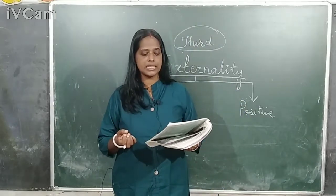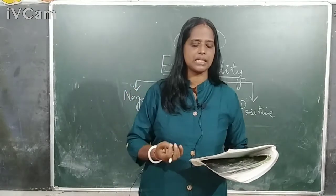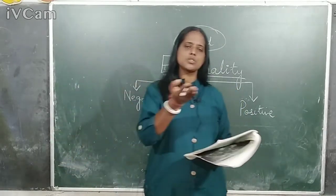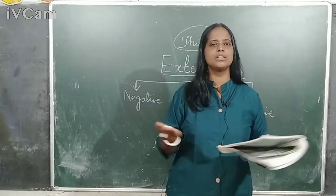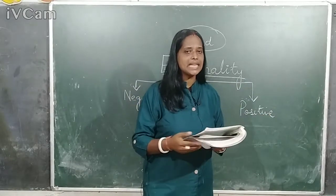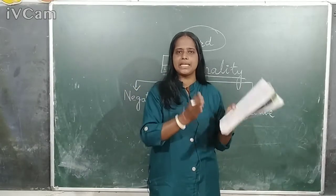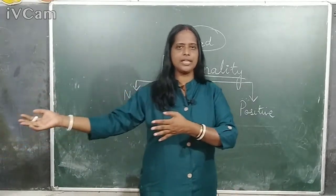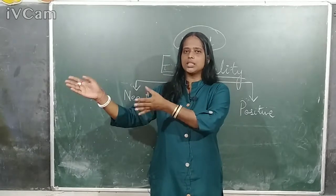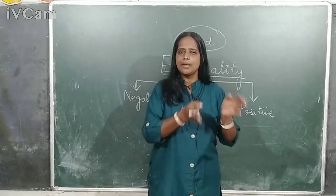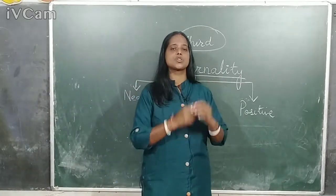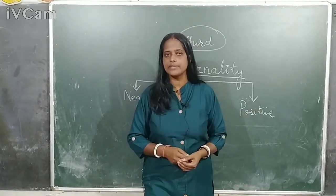The first example: a beekeeper. A beekeeper keeps bees for honey to sell to consumers — both beekeeper and consumers benefit. But what about the third party? If nearby there is a field, the bees go and pollinate the flowers. That third party — the farmer — was not part of the transaction between the beekeeper and his consumers, but benefits because his plants are pollinated by the bees. This is one example of positive externality.